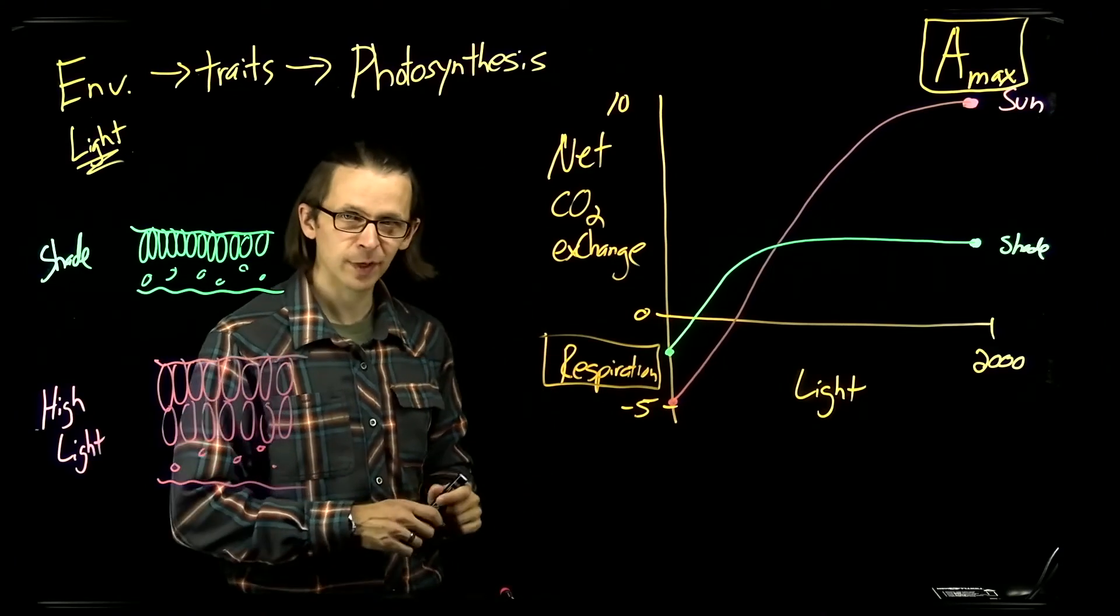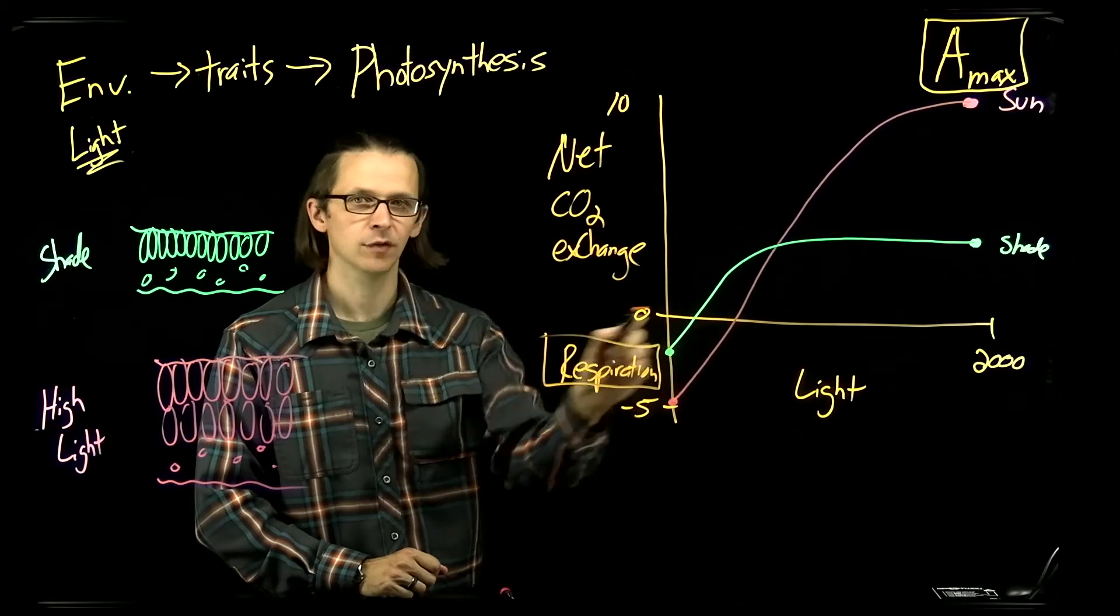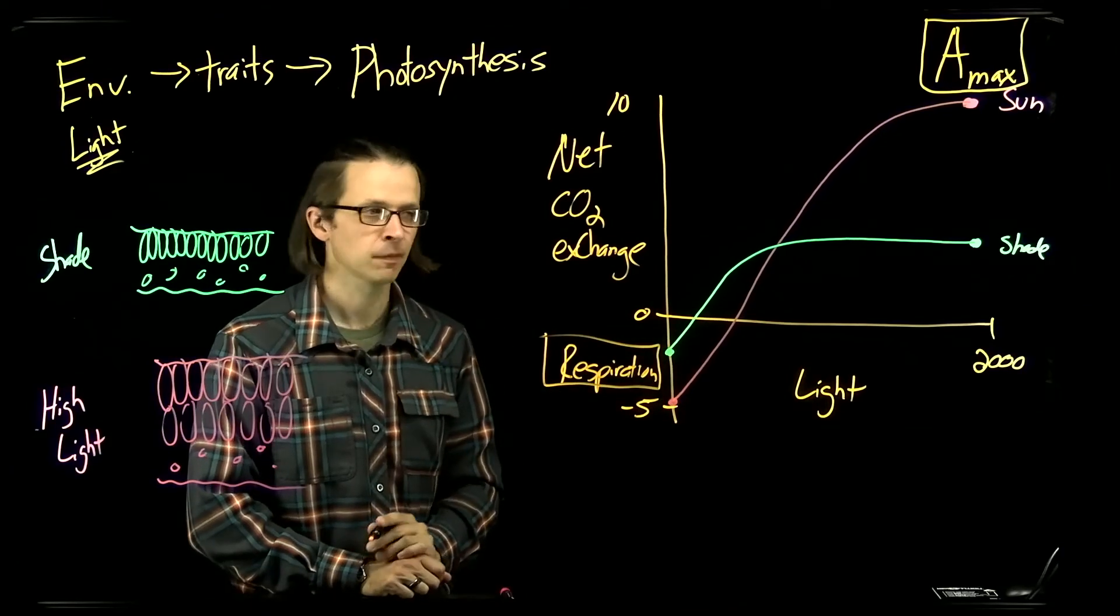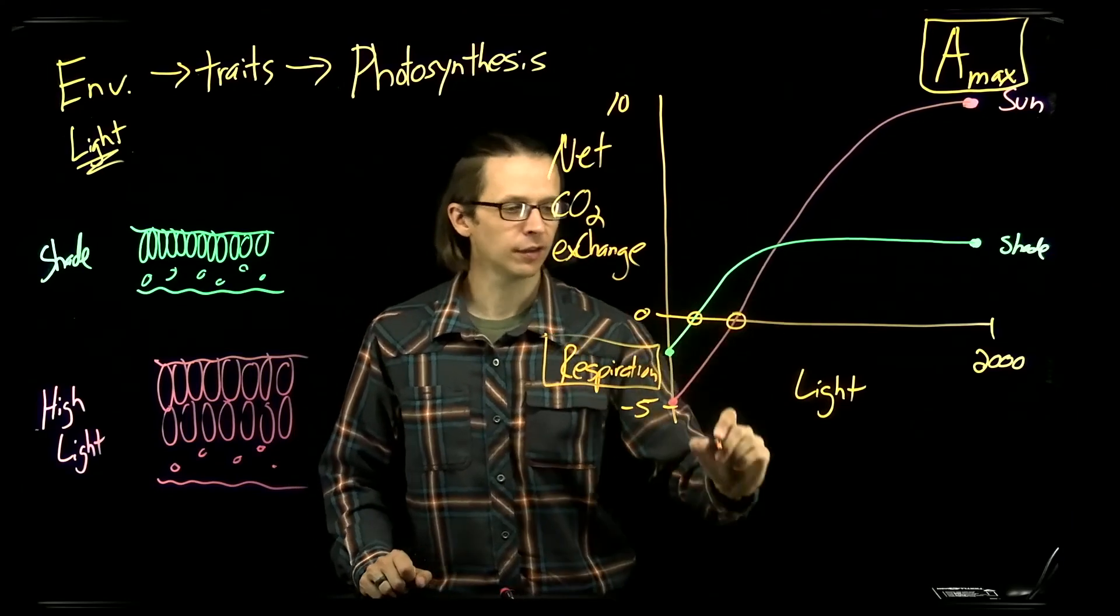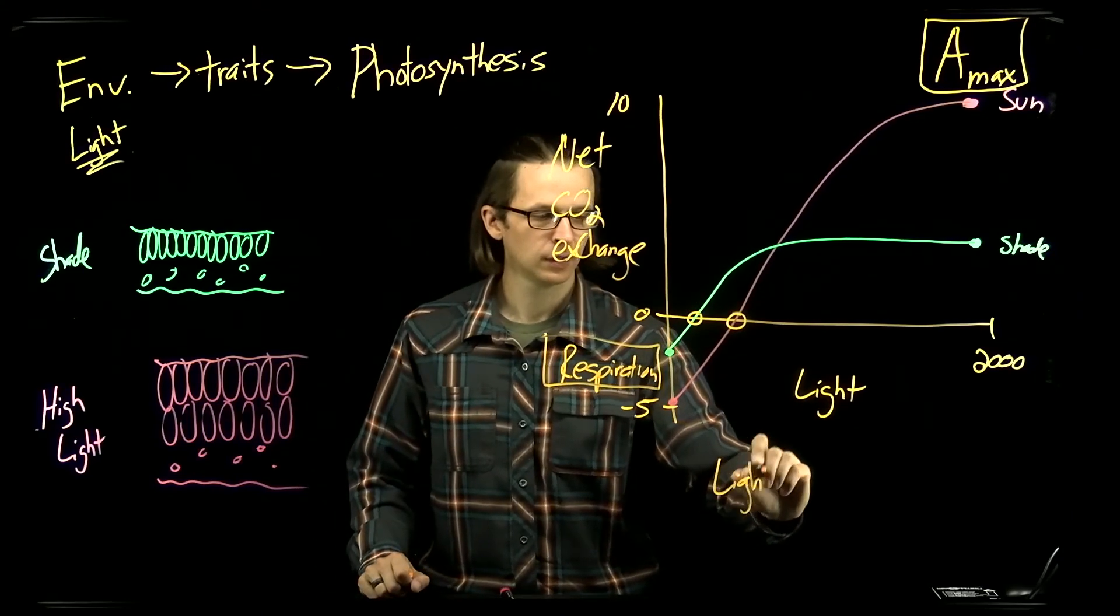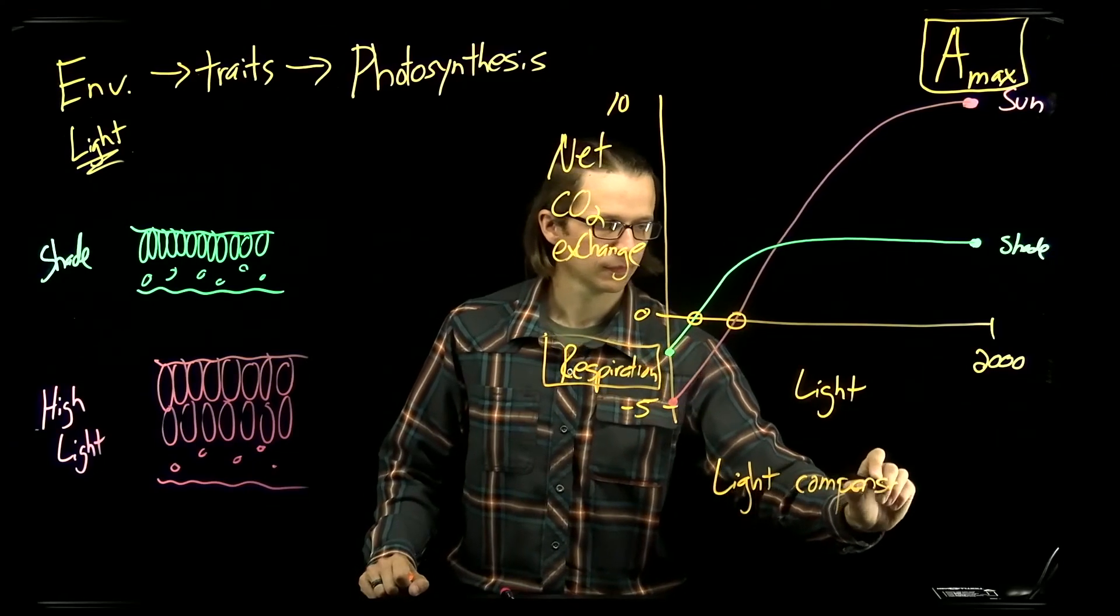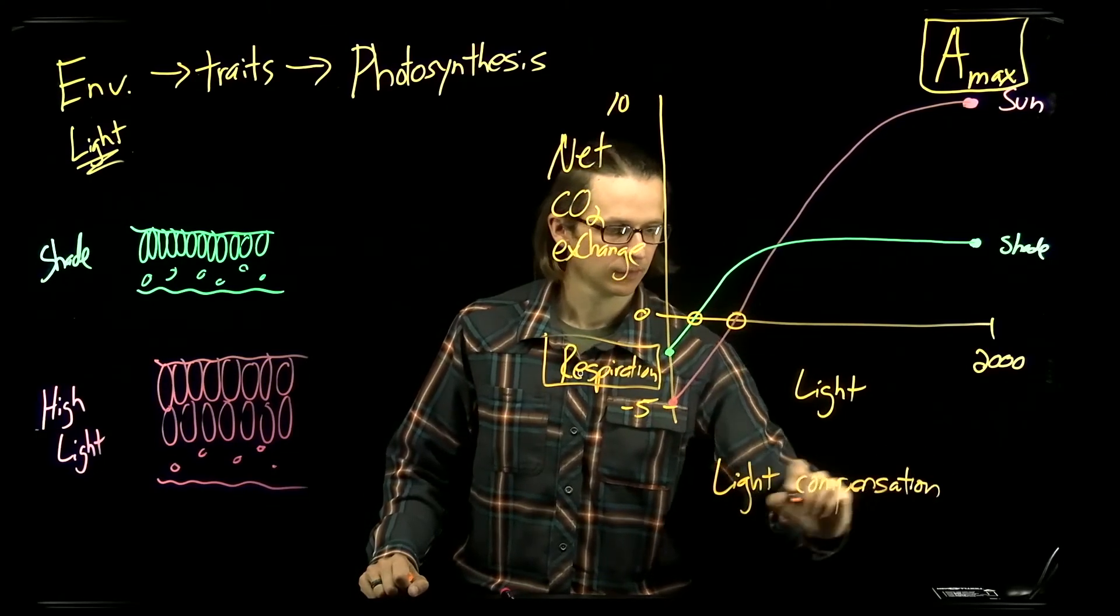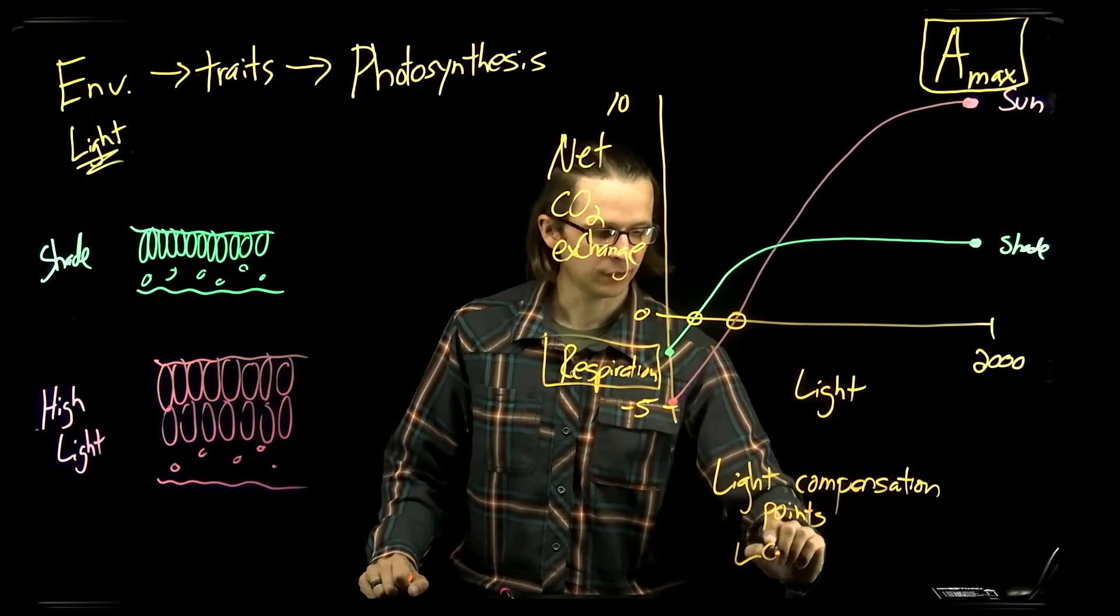Notice there's another special point that occurs here when we have the x-intercept where these curves pass the zero line. These two points here and here, these are called the light compensation points. LCP. Often abbreviated LCP.